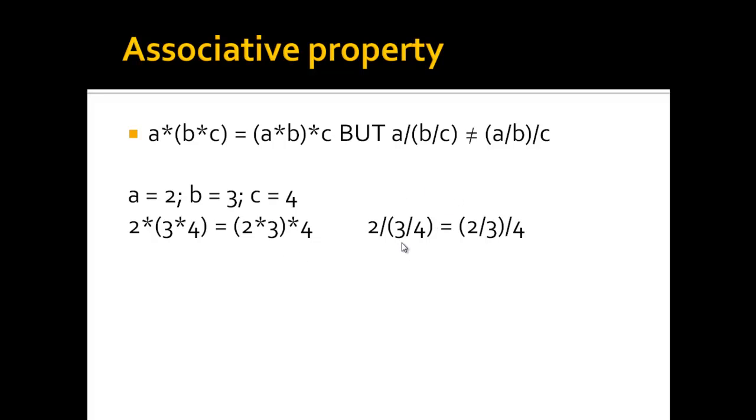While here with the division, 2 divided by 3 quarters is 2.67, or 2 and 2 thirds, while 2 thirds divided by 4 is not the same value, but actually a lot lower. So here you see an example where, indeed, multiplications allow to change the brackets where they are, but division does not.